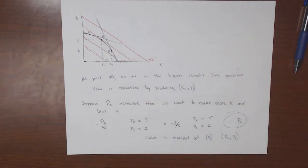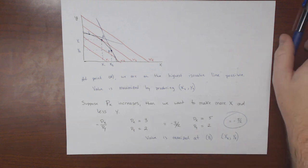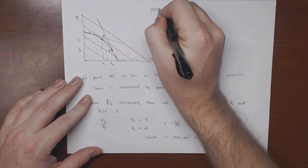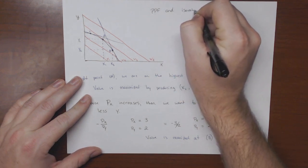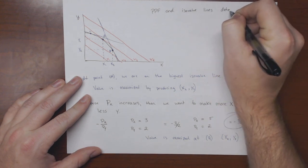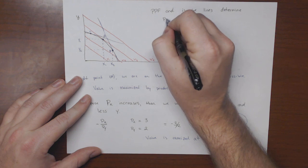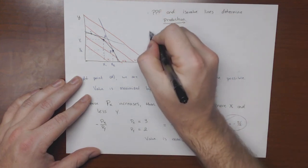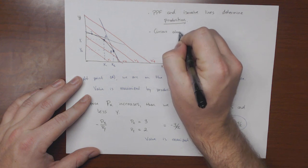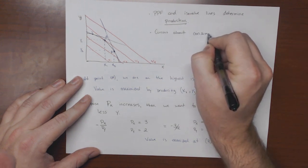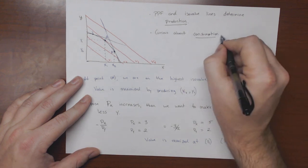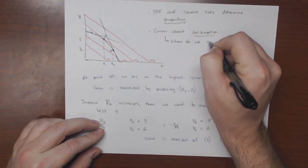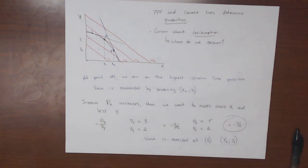In the next video, we'll talk about how we determine where countries will consume. So at this point, we've determined production. The PPF and ISO value lines determine production. But one thing that we're curious about is consumption. So the question now becomes, where do we consume?